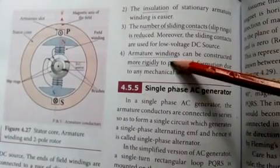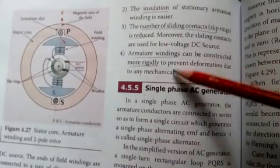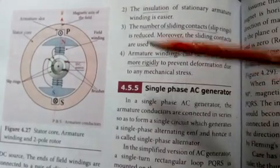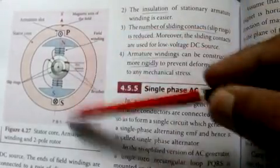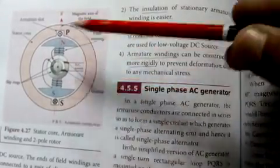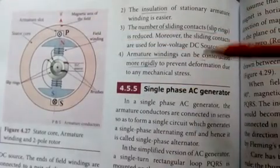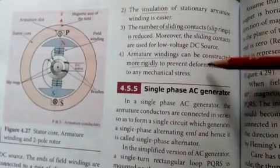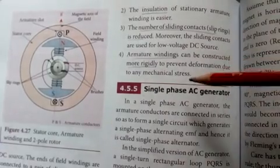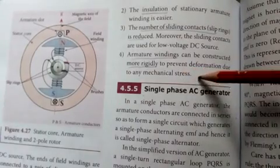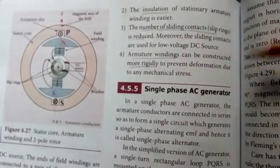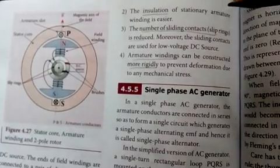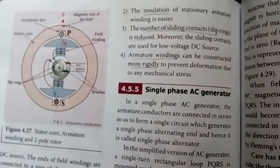Fourth, armature windings can be constructed more rigidly to prevent deformation due to mechanical stress. The coil is on the outer portion and is stronger, so it won't break easily. These are some of the important advantages of the stationary armature rotating field alternator.